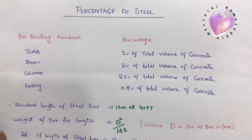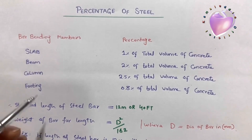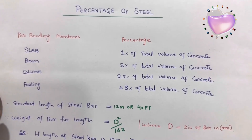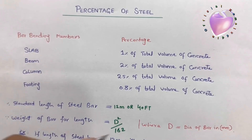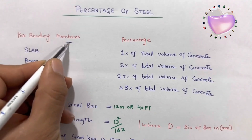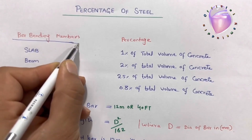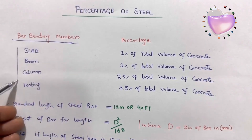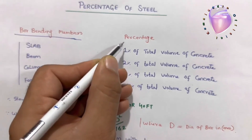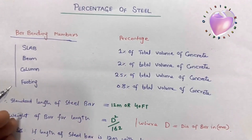In this short but important video, we will look at the percentage of steel reinforcement in the construction of RCC slab, beam, column, and footing. As you can see, in this column we have bar bending members, and on this side you can see the percentage of steel reinforcement for different RCC structures.